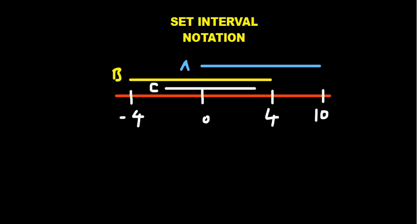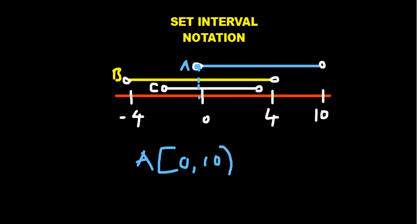To handle real numbers, we use set interval notation. What is very important is to understand that at the end of the interval there is going to be a circle — it can be shaded inside or not shaded. When it is shaded and when it's unshaded, these two have different interpretations. For set A, the left end is shaded and the right end is not shaded. Since it's shaded at zero we use a square bracket, and since 10 is not shaded we use a curved bracket.